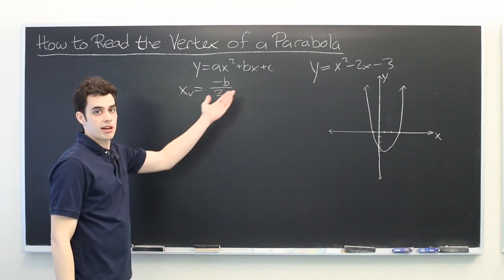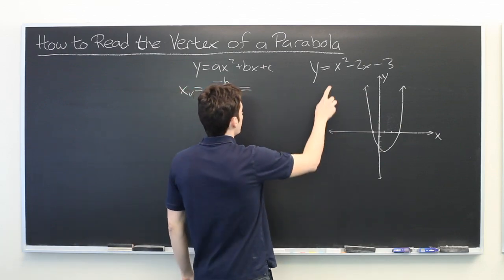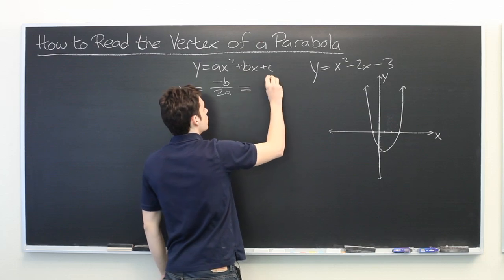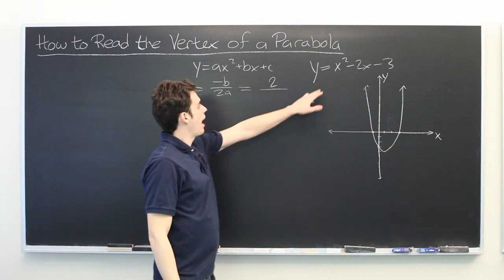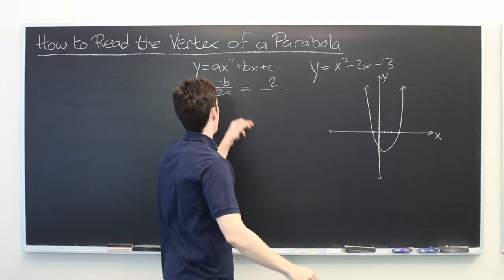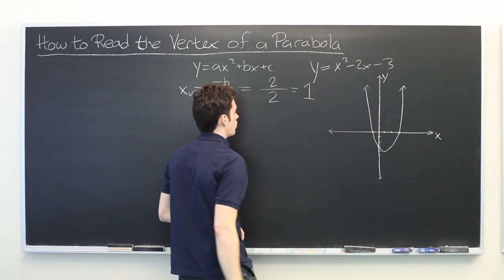So let's go ahead and plug in the numbers that we have and see what we get. b is negative 2, so negative negative 2 is positive 2. a is 1, so 2a is equal to 2, and this simplifies to 1.